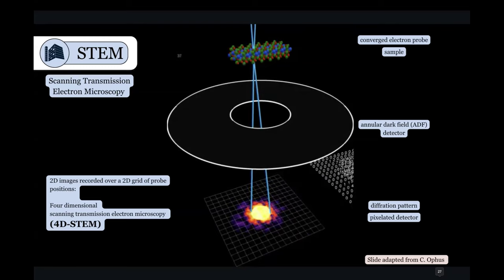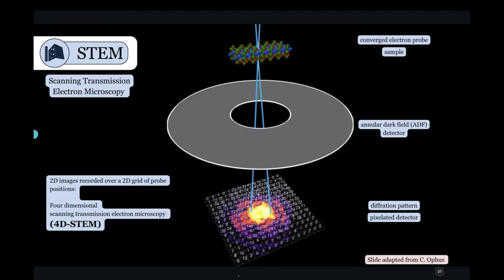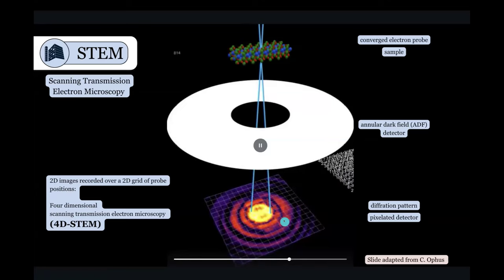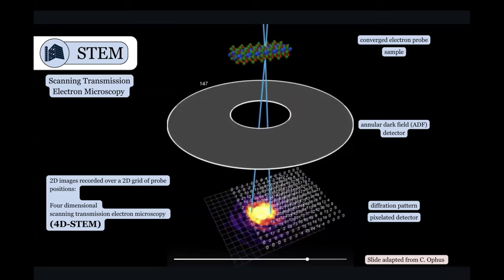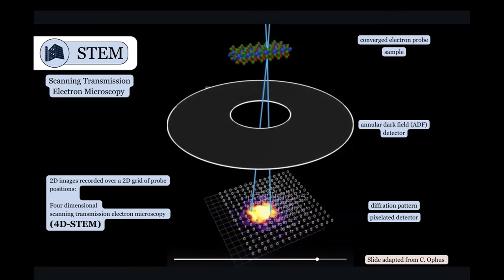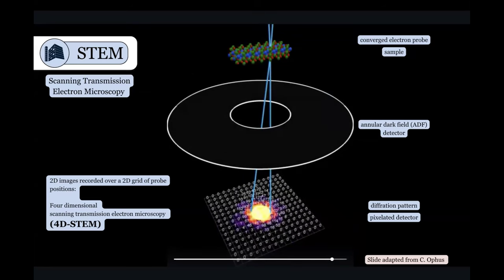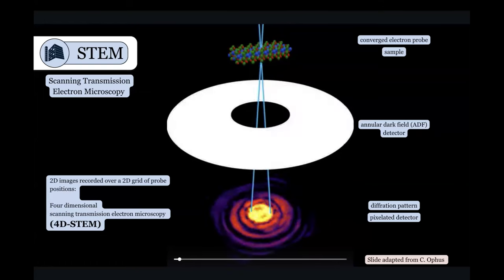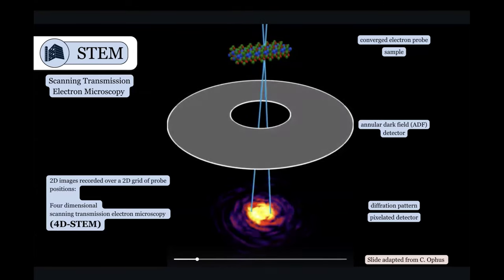But what you're throwing out is a lot of information in diffraction space, which you can see at the bottom here. So what you can do is you can put another pixelated detector down below this dark field detector. And what you end up with is another image for each probe position on your sample. And so this results in a four dimensional data set, two dimensions for your sample in real space. And then for each one of those pixels in real space, you get a full 2D image in diffraction space.